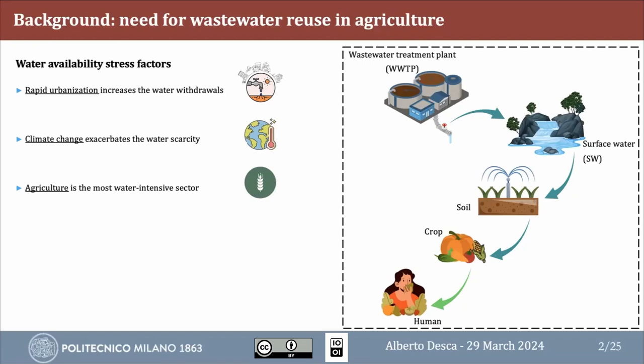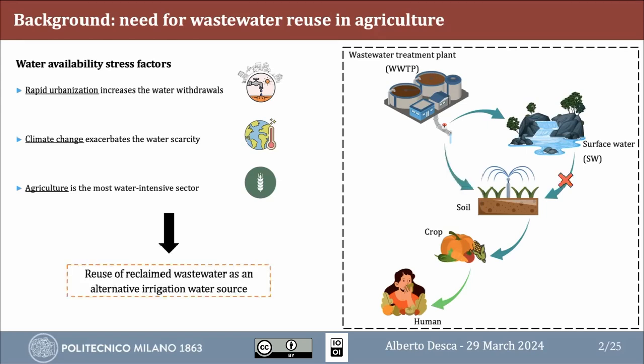I would like to stress the problem of water scarcity, which has increased due to rapid urbanization and climate change. In this context, agriculture plays a fundamental role because, as we know, it is the most water-intensive sector. So at this point, the reuse of reclaimed wastewater as an alternative irrigation water source can be a solution to this problem.